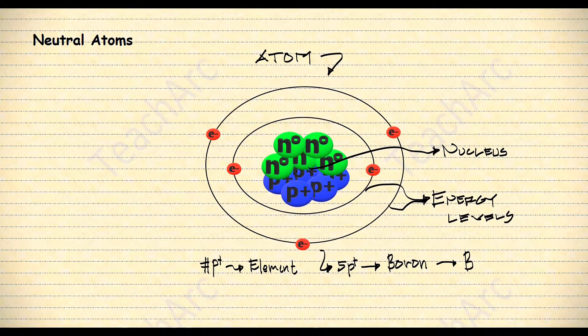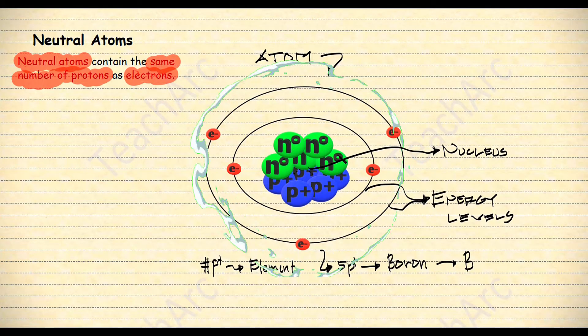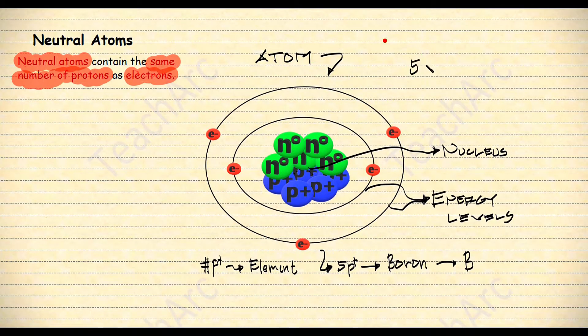Let's talk about neutral atoms. Neutral atoms contain the same number of protons as electrons. Our atom right here and right now is an example of a neutral atom having five protons and five electrons. Since protons are positively charged particles and electrons are negative, they cancel out each other in terms of charge.